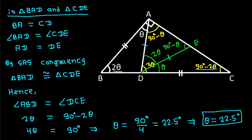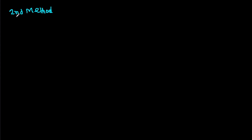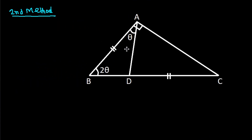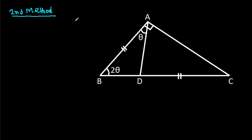For the second method, we know that this angle is 90 degrees minus 2 theta, this angle is 90 degrees minus theta, and this angle is 180 degrees minus (2 theta plus theta), which gives 3 theta.